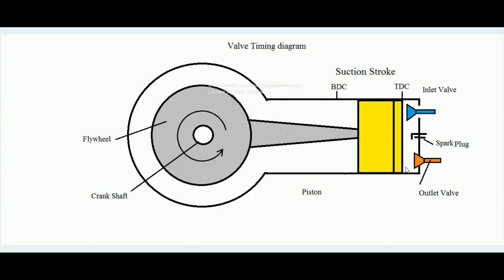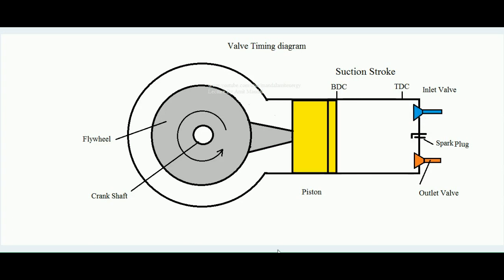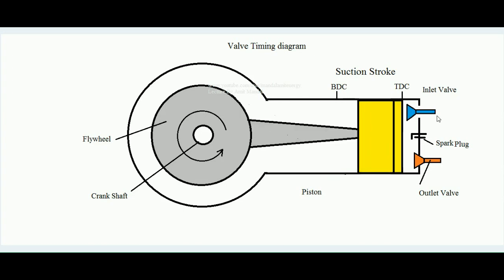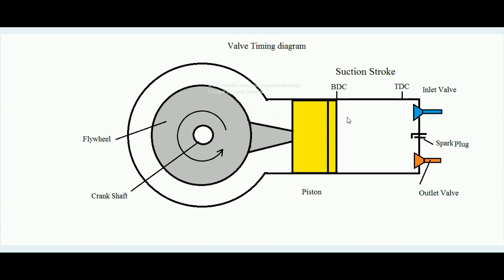In the ideal case, the inlet valve must open exactly at the beginning of the suction stroke. When the suction stroke just starts and the piston is at TDC — we know the piston reciprocates between top dead center and bottom dead center — at that same time the inlet valve must open and remain open until the entire suction stroke ends. When the piston reaches the bottom dead center, the inlet valve must close.